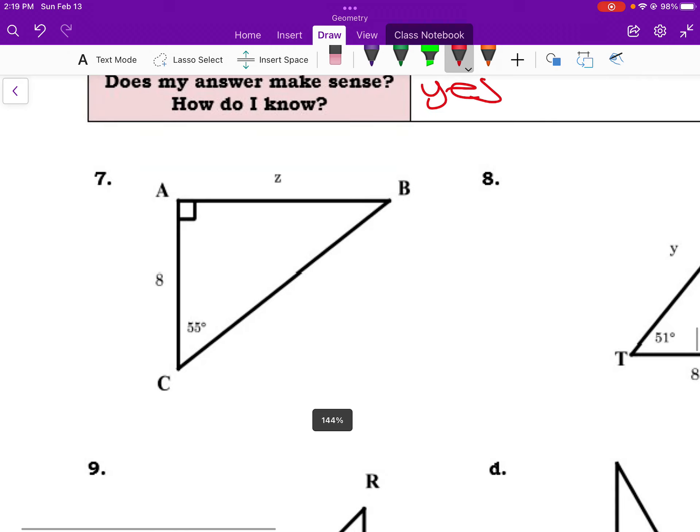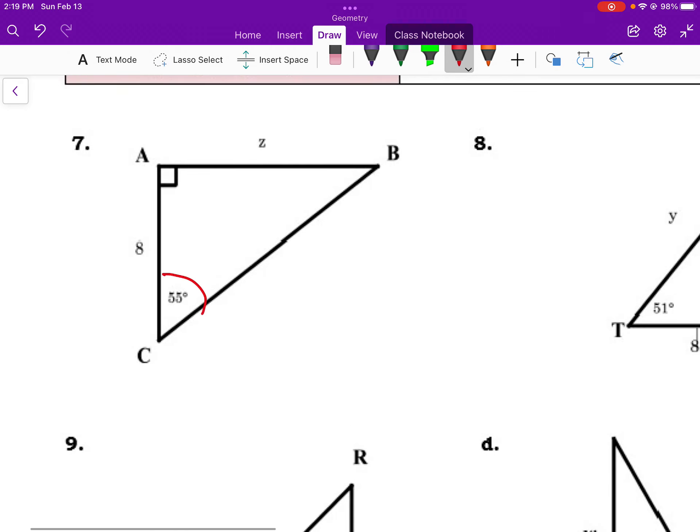Now we're going to explore some diagrams and just solve for the unknowns. So with respect to 55, I have the opposite and the adjacent. So those are the two values for a tangent ratio. So I would say the tangent of 55 equals z over 8. To get rid of that 8, I need to multiply it to both sides.